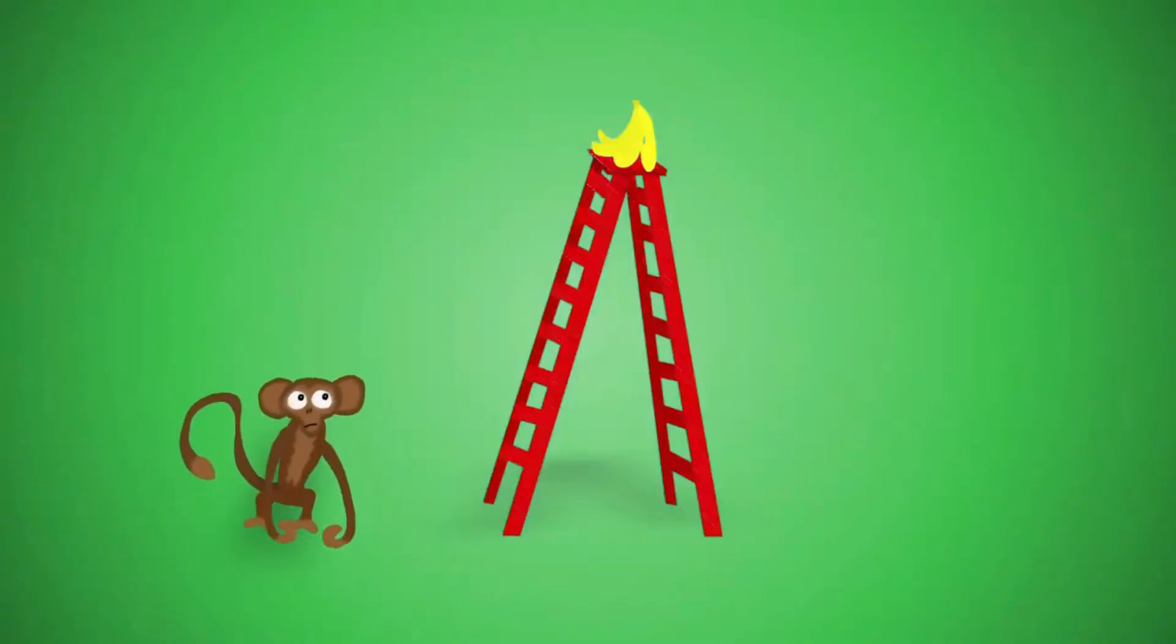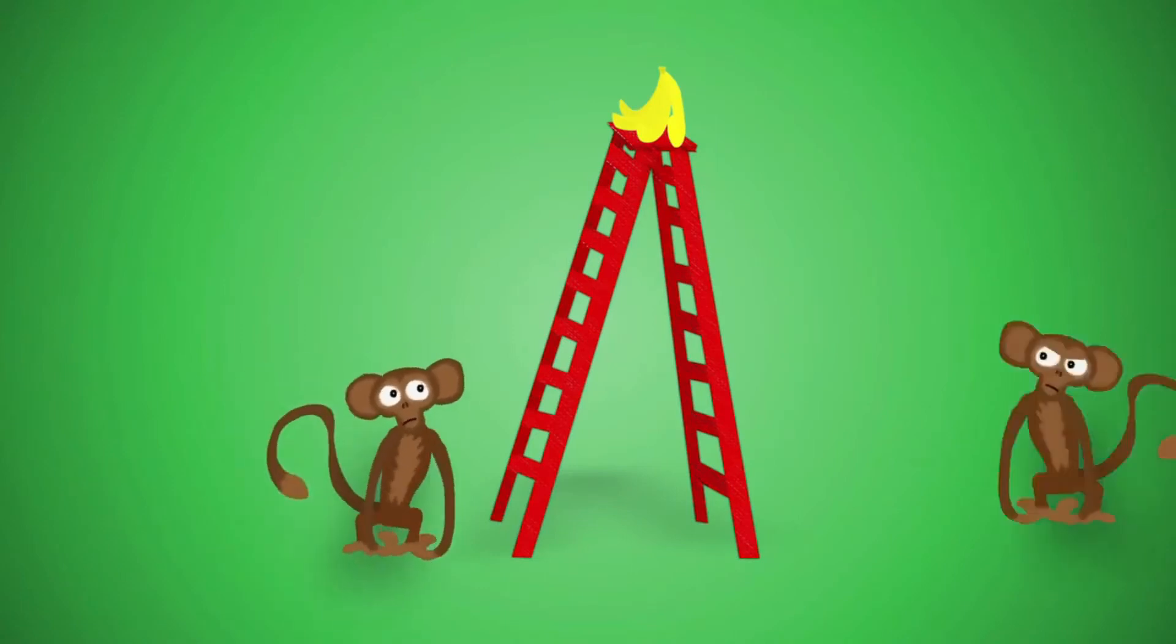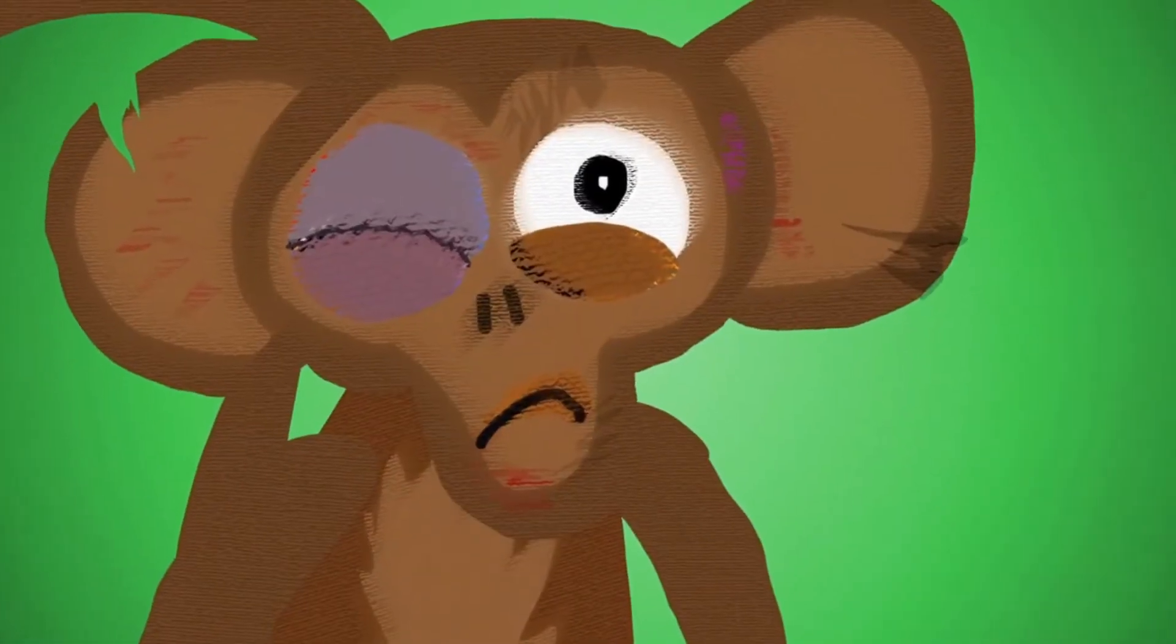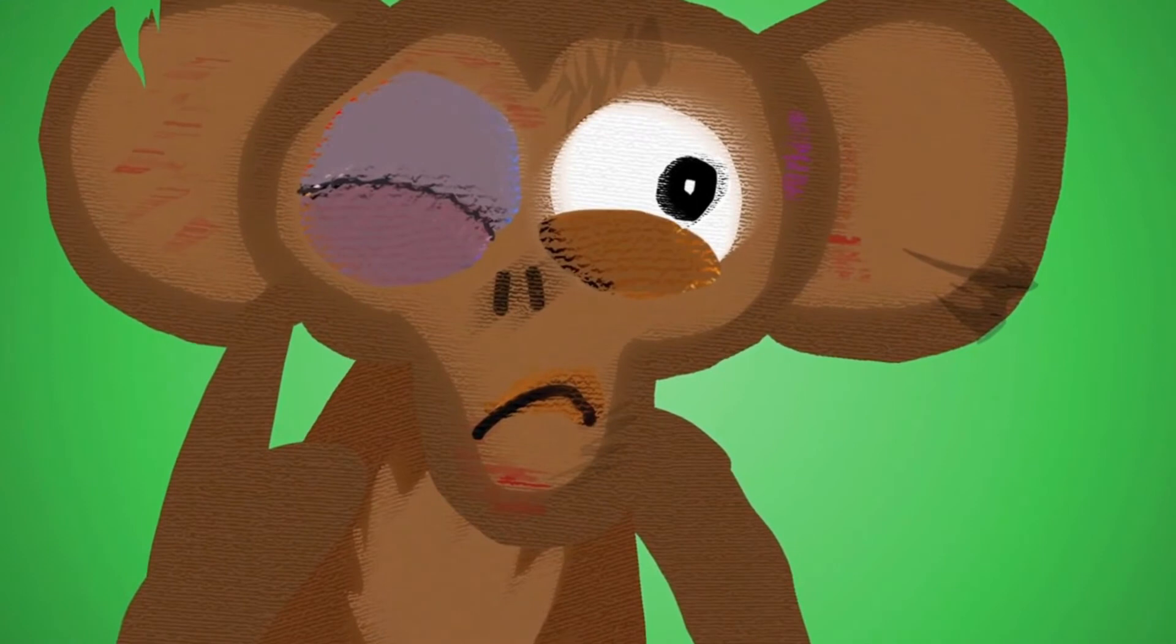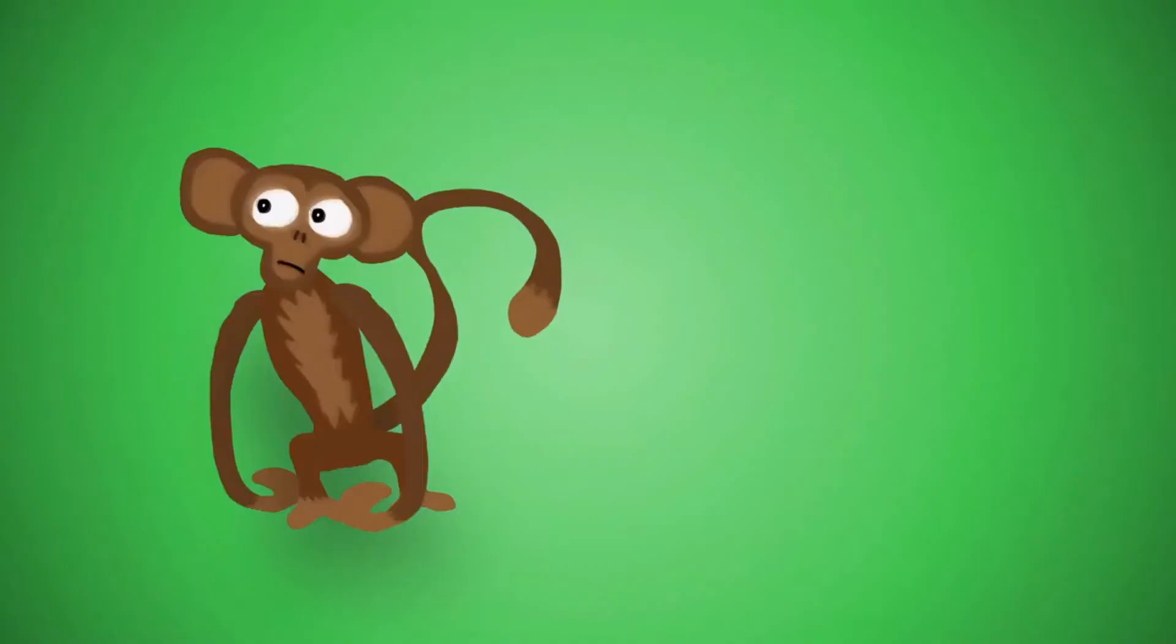After a while, each time a monkey went for the banana, the other three monkeys attacked to prevent him from going up, because anyone going up put them in a difficult situation. The monkeys learned not to climb the ladder.